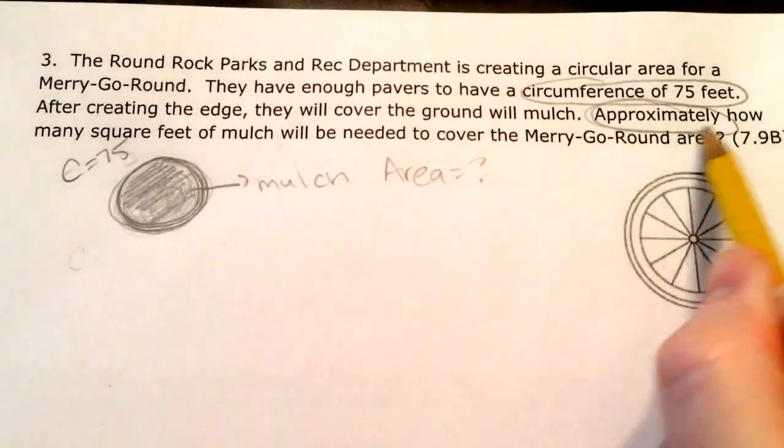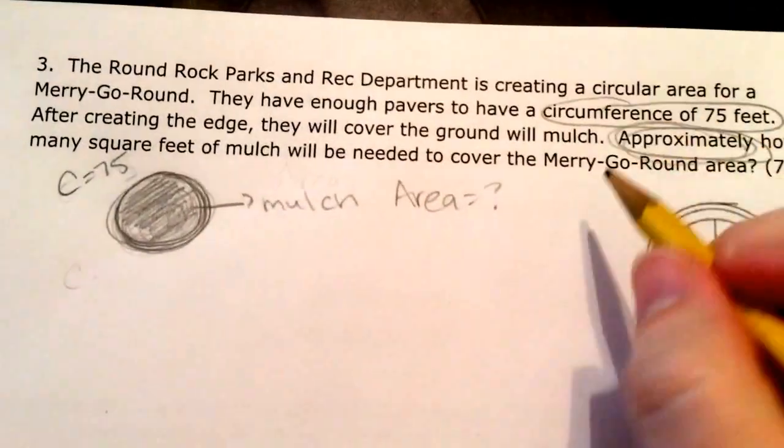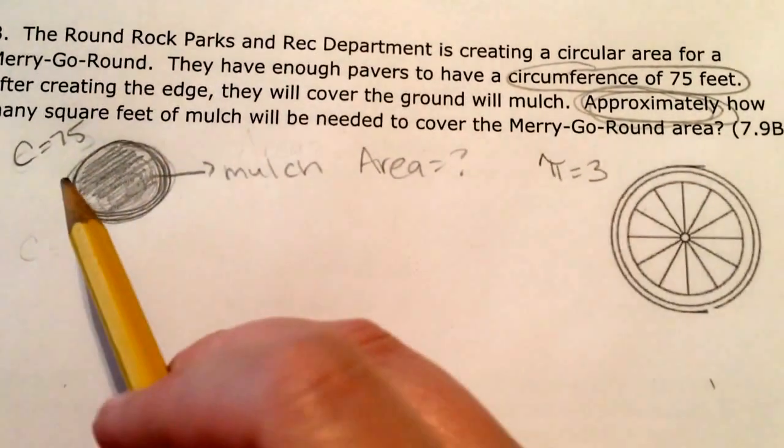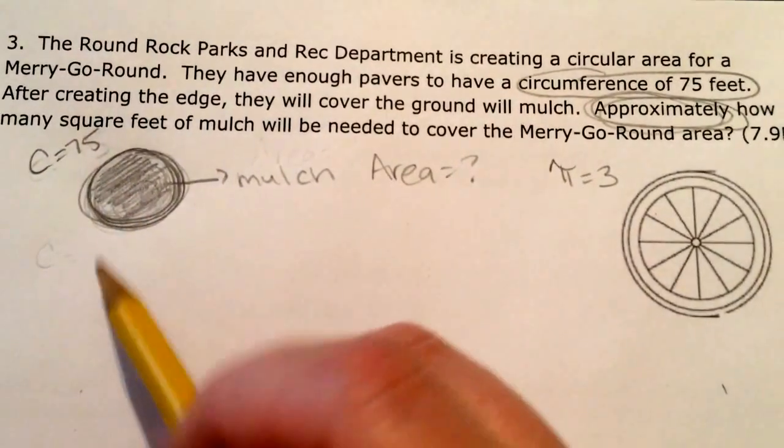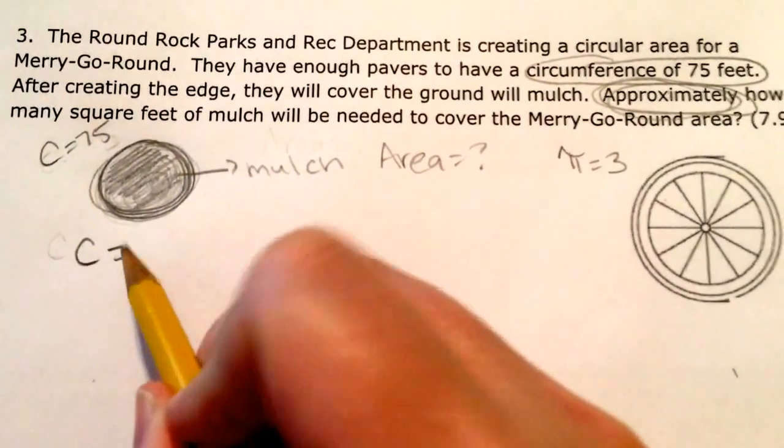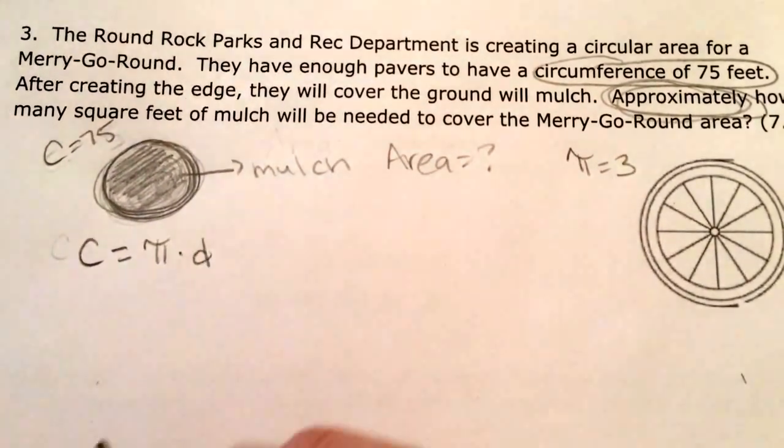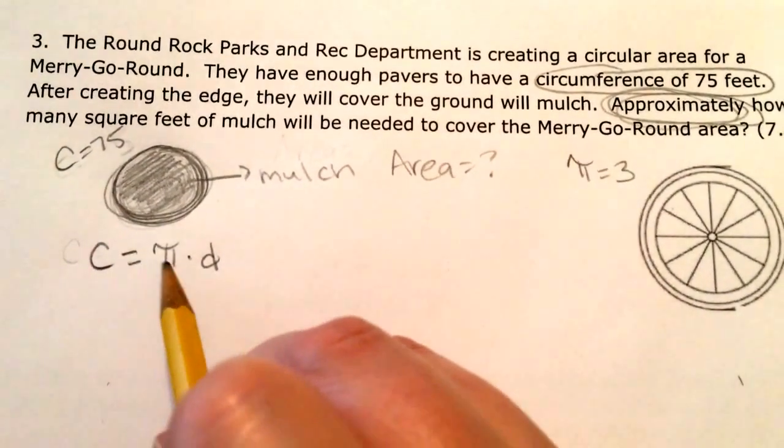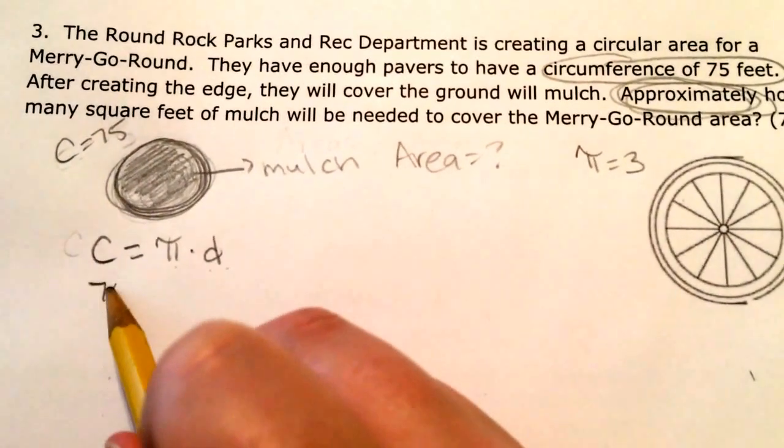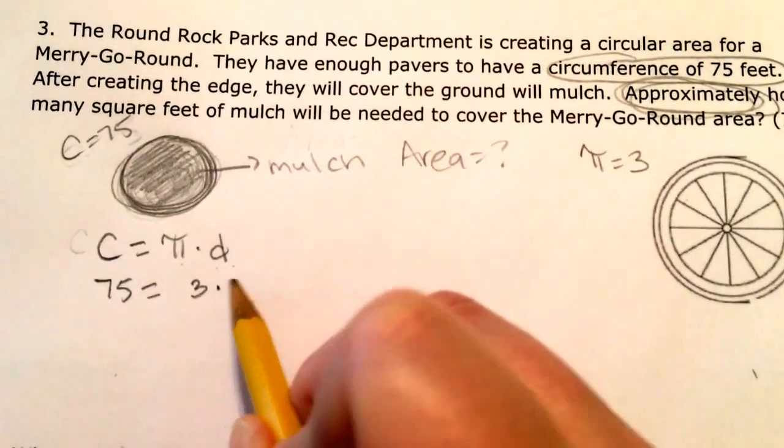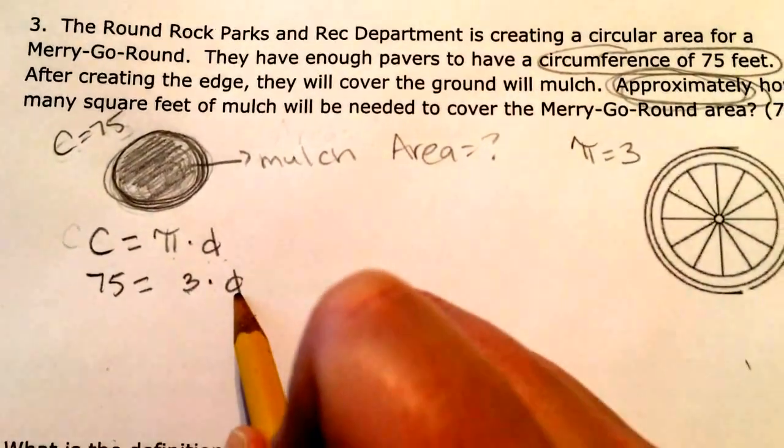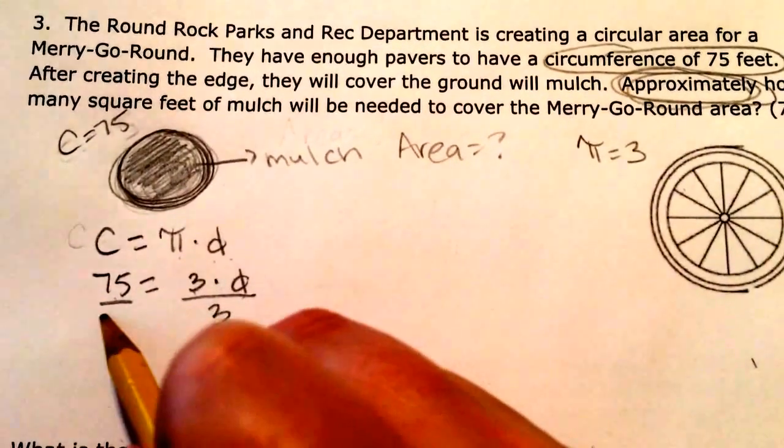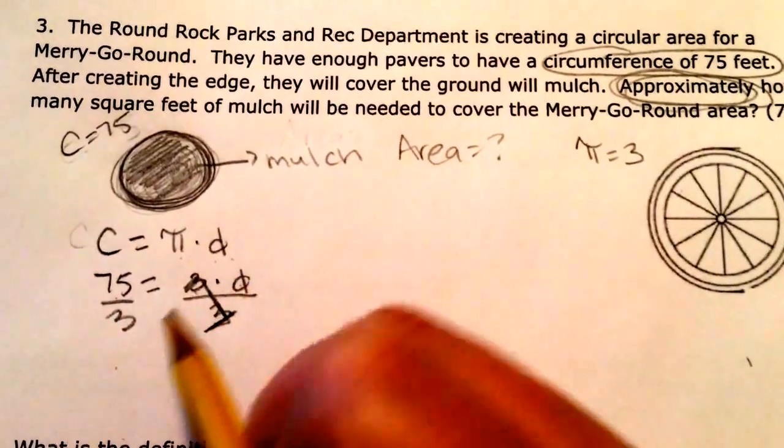And it says approximately, so I'm going to take that to mean that pi is just equal to 3. We're not even going to worry about the 3.14. Alright, so I know that circumference is 75 feet, and I know from looking at my chart that circumference is pi times diameter. So circumference is pi times diameter. If I know the circumference is 75 and I can say that pi is 3, I know that 3 times some number I don't know, the diameter, is equal to 75. So I can divide both sides by 3, that goes away, and I'm left with just diameter.